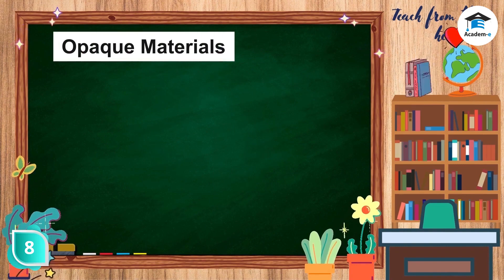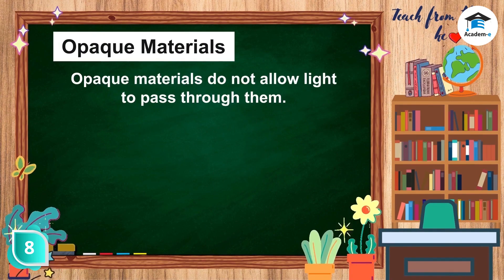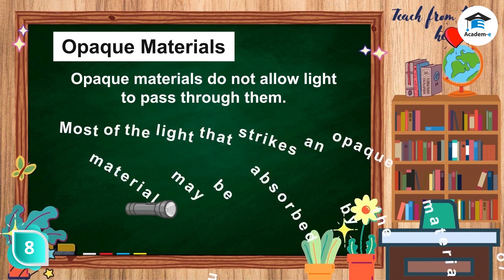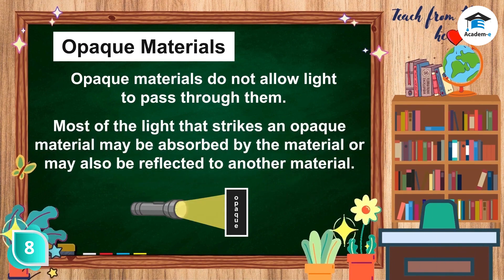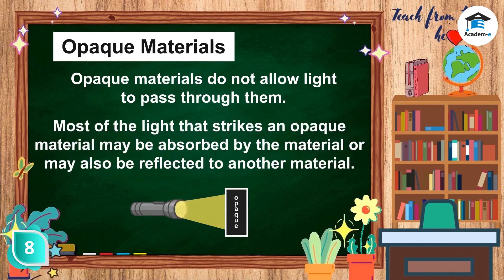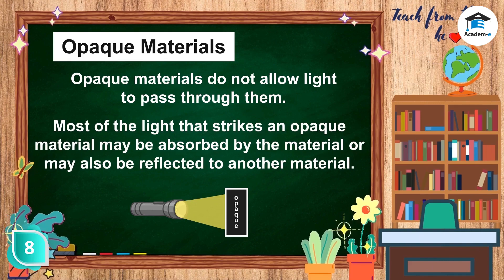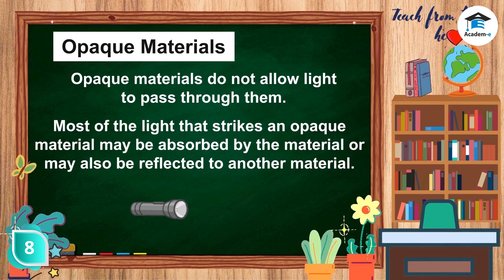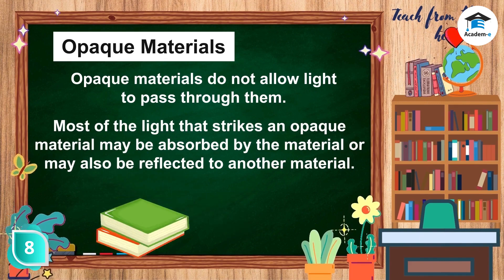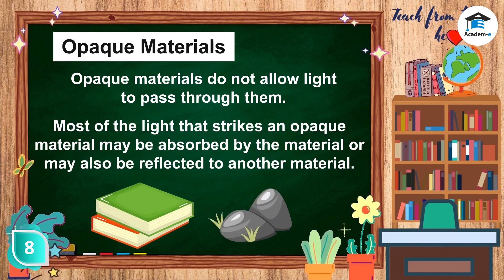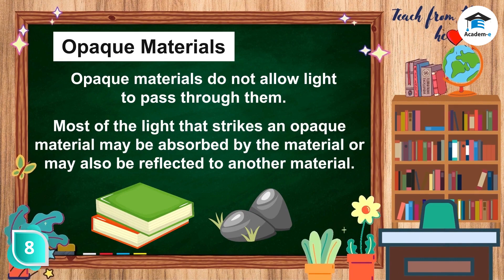Opaque Materials. Opaque materials do not allow light to pass through them. Most of the light that strikes an opaque material may be absorbed by the material or may also be reflected to another material. Bricks, book, wood, stone, and metal are examples of opaque materials.